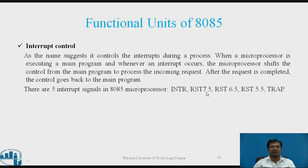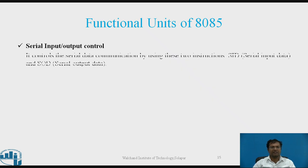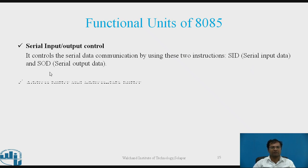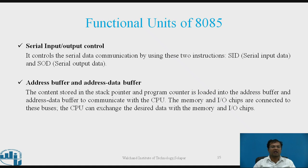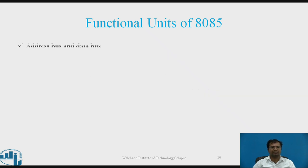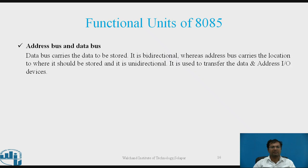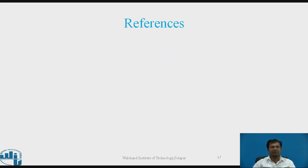There are five main hardware interrupts: RST 7.5, RST 6.5, RST 5.5, INTR, and TRAP, managed by the interrupt control unit. Serial I/O is controlled by SID and SOD for serial communication between the microprocessor and an external device. The address buffer and address/data buffer hold address and either address or data respectively. The 16-bit address bus and 8-bit data bus carry address and data.